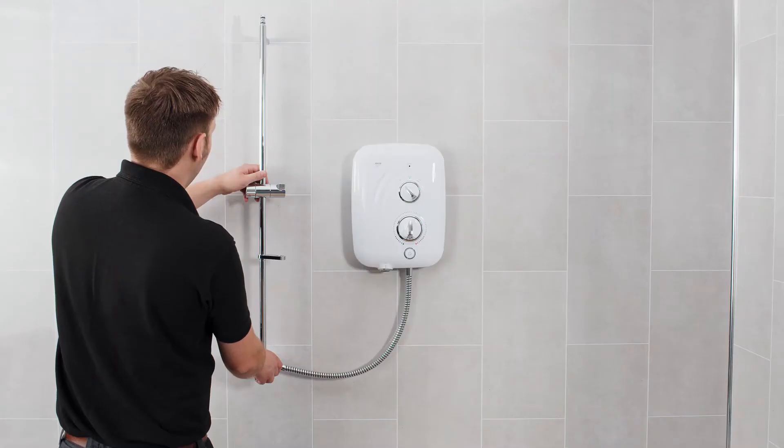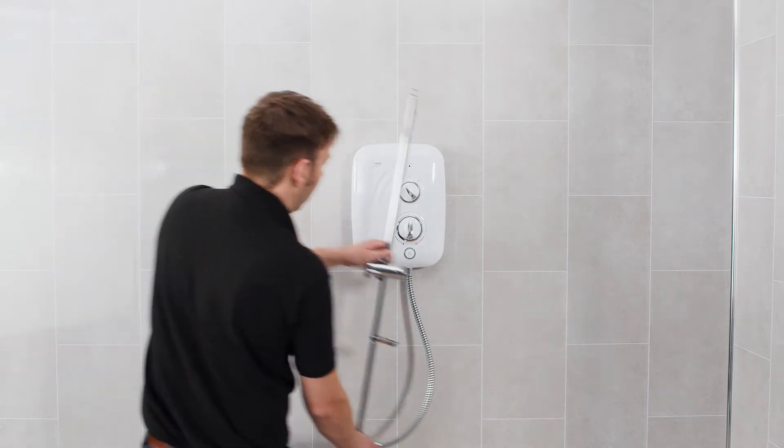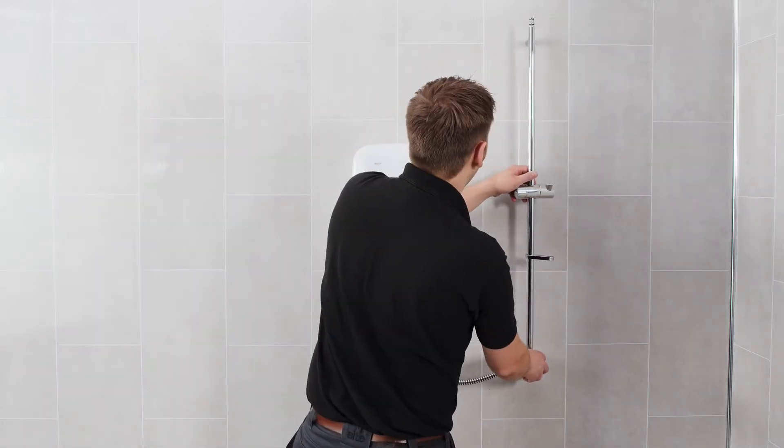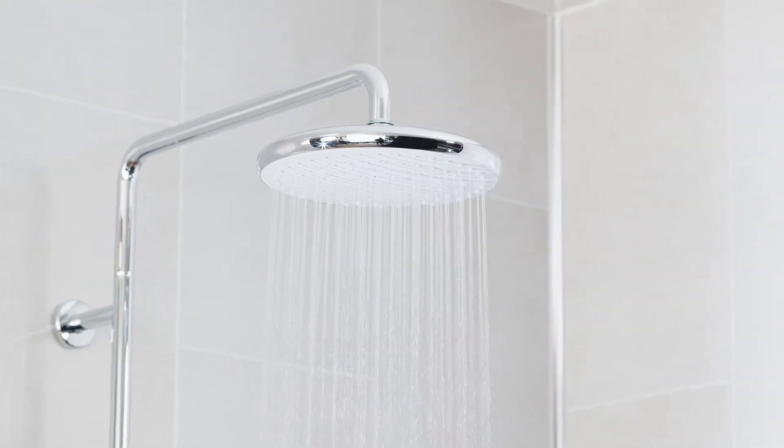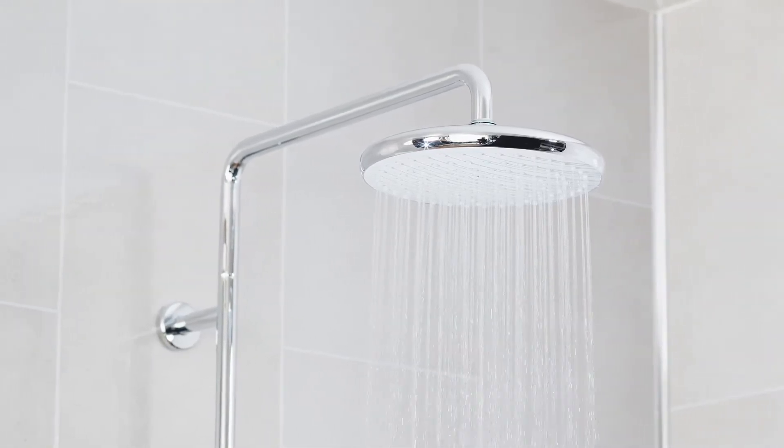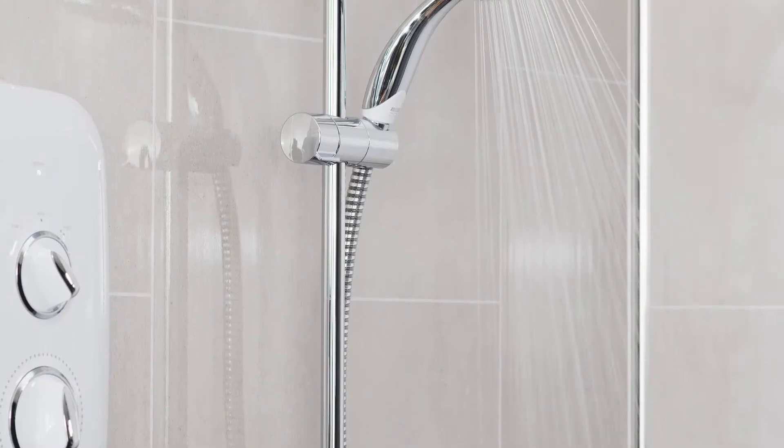Like the single outlet version, the Myra Elite SE Dual can have the fittings kit installed to the left or to the right of the shower unit by up to a 300mm radius from the outlet. You can plan this out as part of your installation.